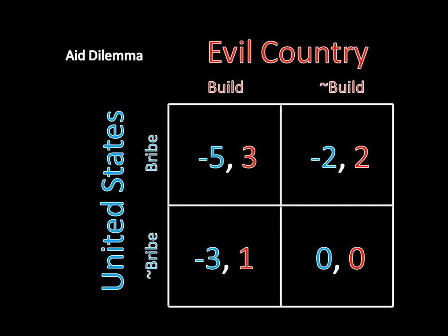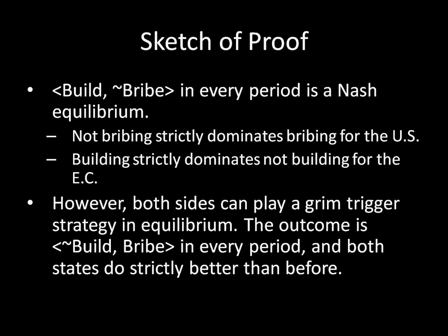To sketch out what I'm going to be doing in this proof, I'm going to be doing two categories of things. First, I'm going to show you that the build/not-bribe set of strategies in every period is a Nash equilibrium — where the United States does not bribe in every period and the evil country builds in every period — based on the fact that not bribing strictly dominates bribing for the United States, and building strictly dominates not building for the evil country. Second, I'm going to show there's a grim trigger strategy that can be played in equilibrium where the outcome is not-build/bribe in every period, and that this outcome is strictly better for both states than the build/not-bribe outcome.